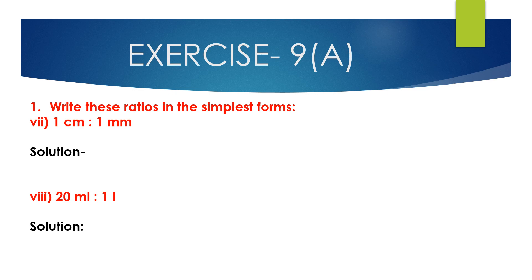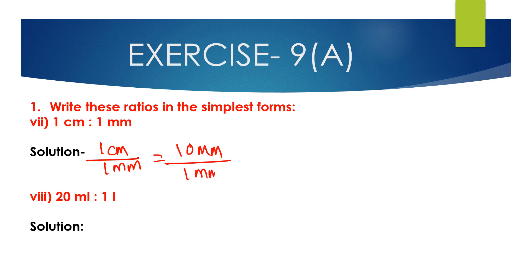Now question number 7th bit: 1 cm is to 1 mm. Convert this ratio into the simplest form. We can write 1 cm divided by 1 mm. The antecedent is 1 cm and the consequent is 1 mm, which are not of the same unit. So first convert 1 cm into millimetres: 1 cm is 10 mm. So we get 10 mm divided by 1 mm, which is 10:1. And 10:1 is the simplest form of the ratio 1 cm is to 1 mm.